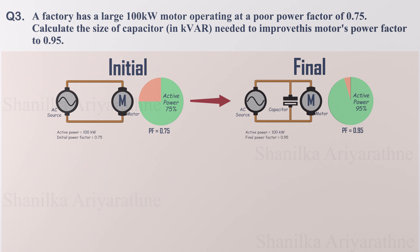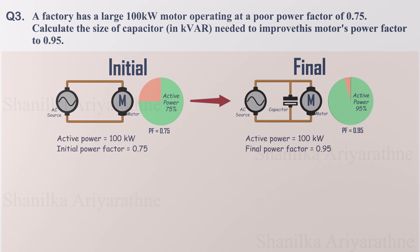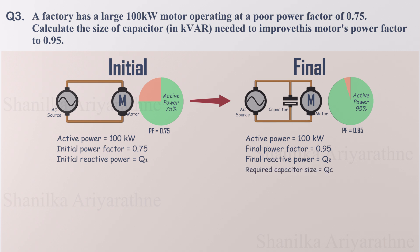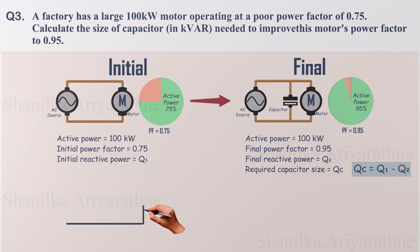So how do we find the perfect capacitor size? Here's our plan: if the initial reactive power is Q1 and the final reactive power is Q2, the size of the capacitor's reactive power we need, QC, will be equal to Q1 minus Q2. So we have to find the reactive values Q1 and Q2. To find the reactive powers, there are several methods — let's draw the power triangles.